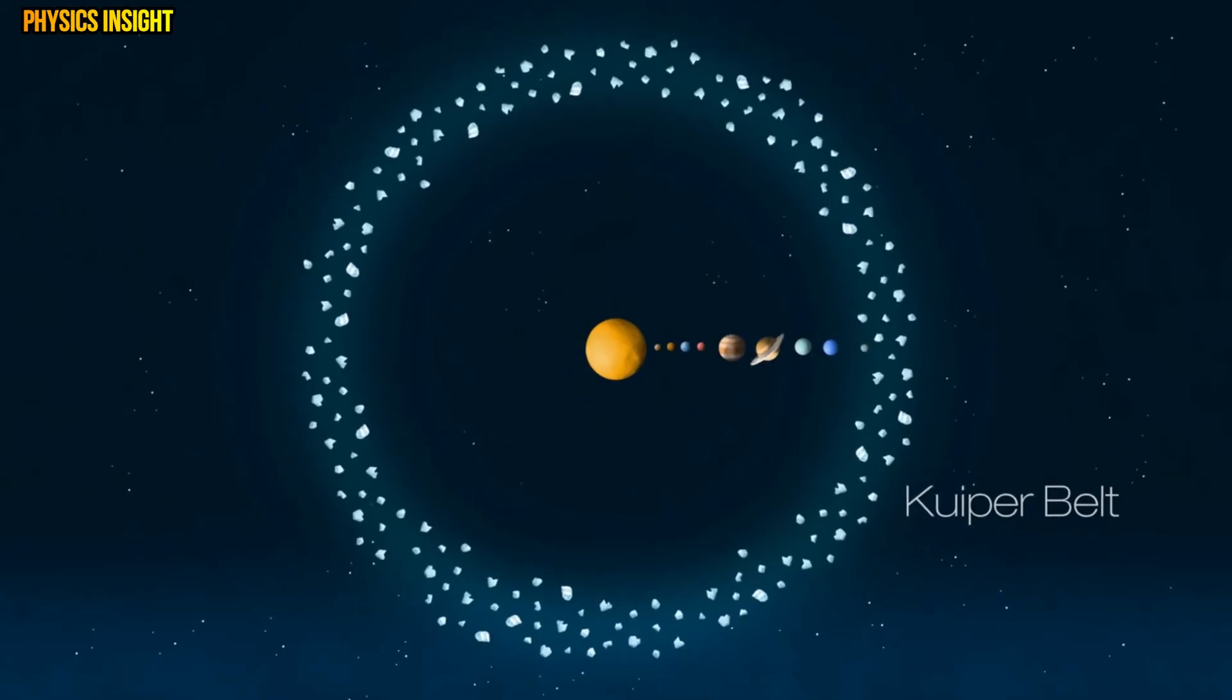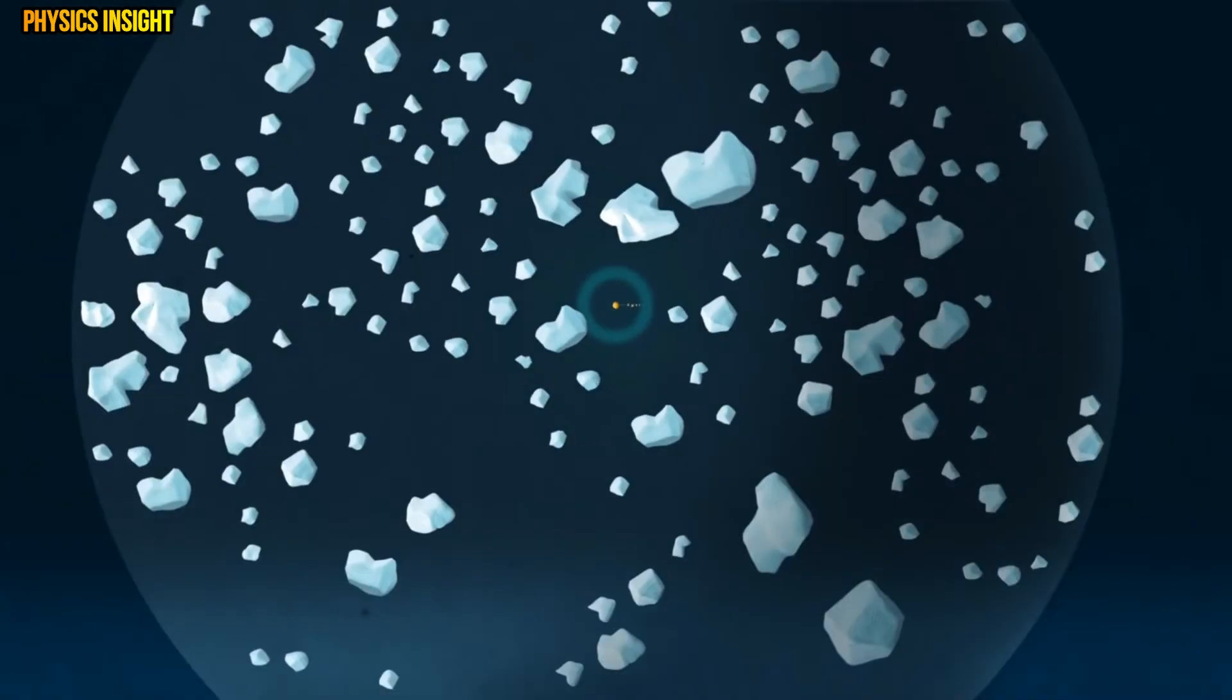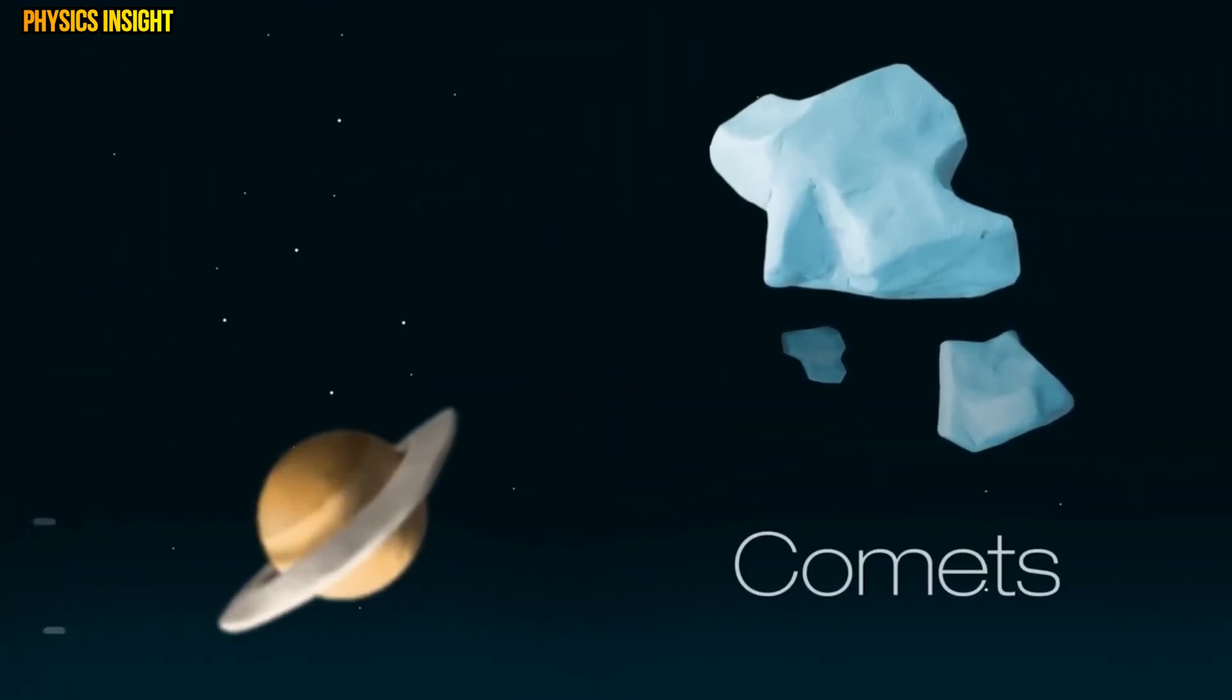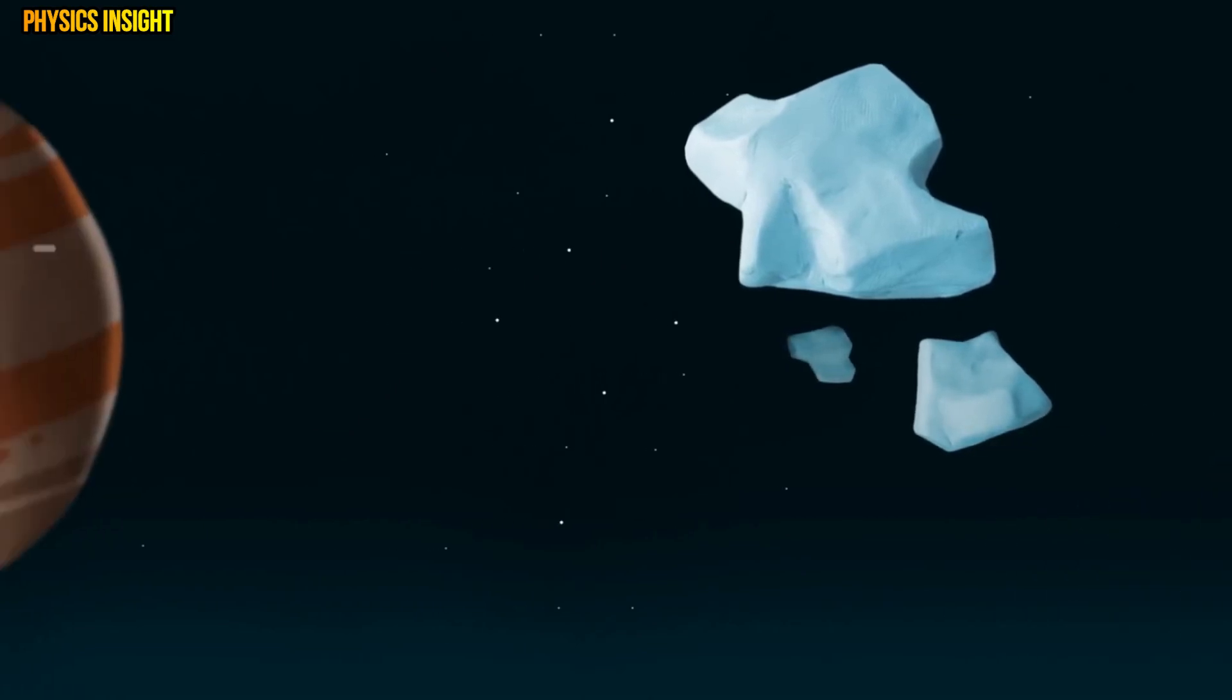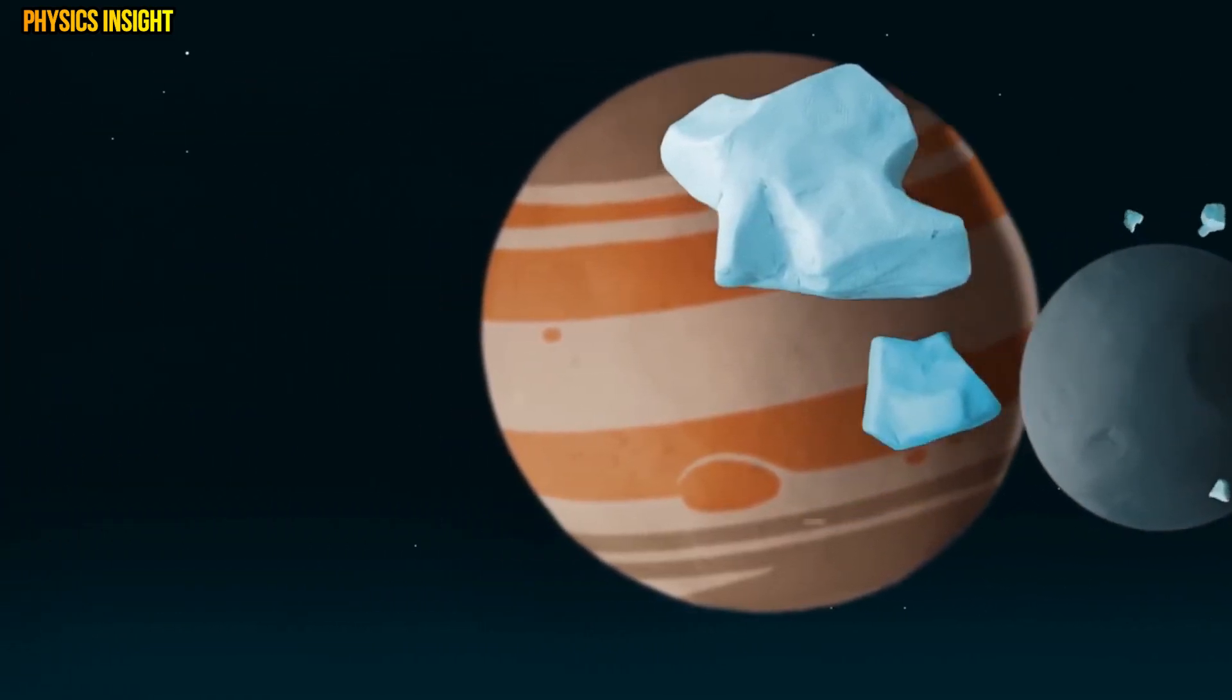Even more of these ancient dirty snowballs exist in a huge bubble called the Oort Cloud. These icy objects can get bumped off course sometimes to become comets that journey past the planets towards the Sun. Some collide with other objects and get smashed to bits.